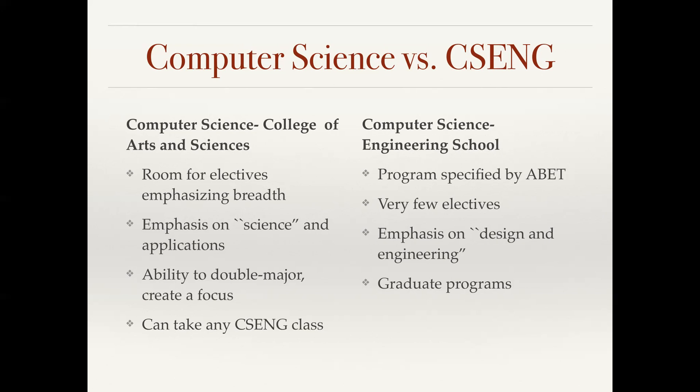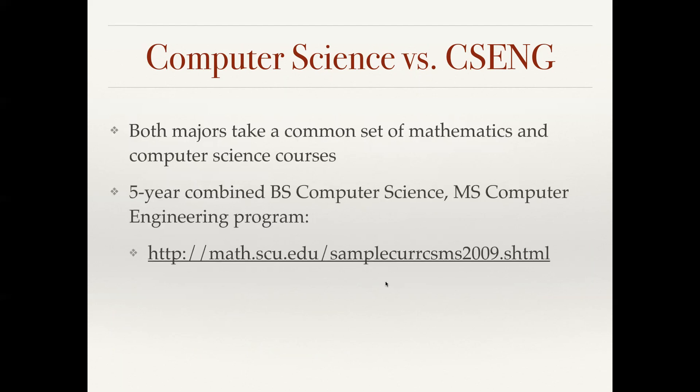Our students are allowed to take any computer science and engineering class that they like, just like the computer science and engineering students can take any of our classes. And in fact, there are common courses in both majors. The computer science and engineering degree in the engineering school is within an engineering degree, so it's a program specified by the accreditation board for engineering, called ABET. Because of that, there are lots of requirements outside of the computer science footprint, which include things like chemistry and general engineering courses. Because of that, there are very few electives and very little room to add extra classes within the four years. The emphasis is on the design and engineering within computer science. In addition, the engineering school does have graduate programs, whereas the College of Arts and Science does not. There is an option of doing a five-year combined bachelor's of science in computer science in our department and then a fifth year getting a master's of science in computer engineering, and the URL for that is below.